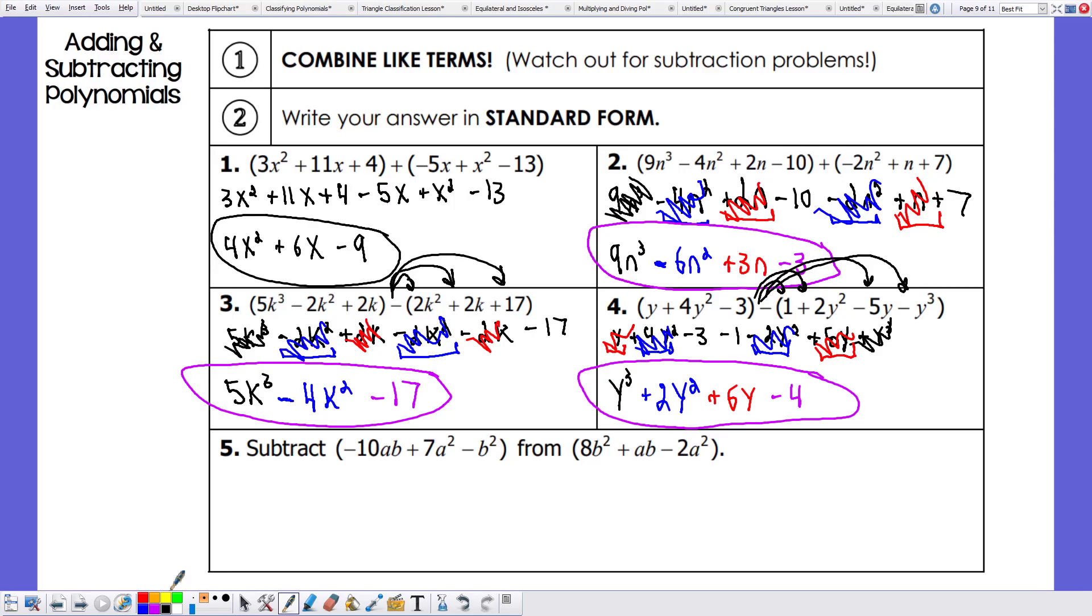Part 5, last one, says to subtract negative 10ab plus 7a squared minus b squared from 8b squared plus ab minus 2a. So if I told you to subtract 3 from 5, that would be the same thing as saying 5 minus 3. Subtracting 10 from 20 is 20 minus 10. So when we subtract the first polynomial from the second, we want to write the second polynomial first. So 8b squared plus ab minus 2a squared.